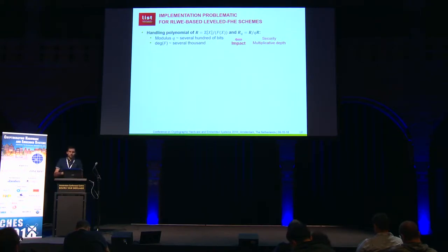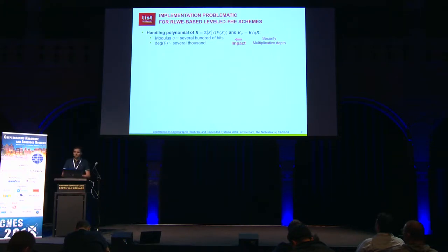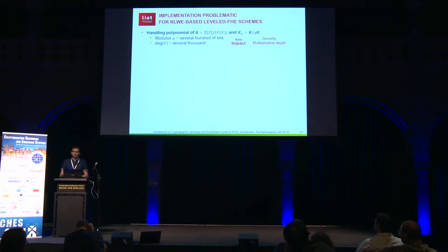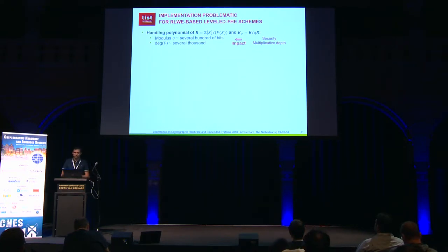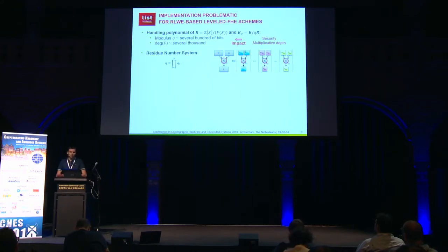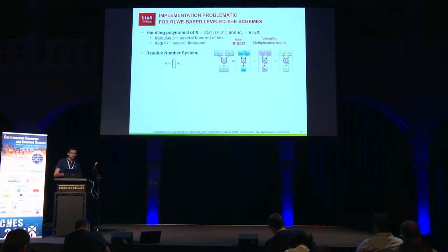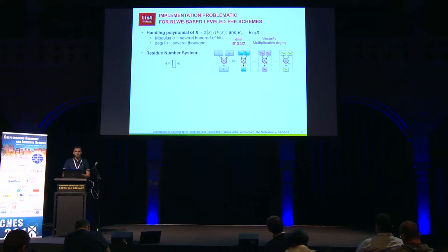In RLWE-based schemes, we have to handle elements of polynomial rings. In the case of homomorphic encryption, those polynomials get really large, because if someone wants to compute a great number of multiplications in the encrypted domain, he wants to increase the noise budget of the ciphertext, and to do that he increases the size of the coefficients. For security reasons, the degree also has to get larger, so both the degree and the coefficient size become problematic. One way to address the complexity of large coefficients is to use the residue number system: according to a basis of co-prime moduli, a large operation using multi-precision arithmetic becomes k independent smaller operations in modular arithmetic.